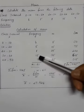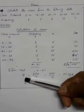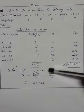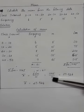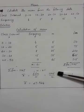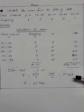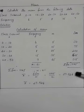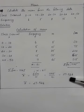X bar equals sigma FM divided by N. Sigma FM is 1145, N is 41. 1145 divided by 41 equals 27.926. Mean equals 27.926.